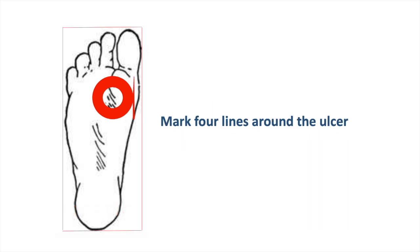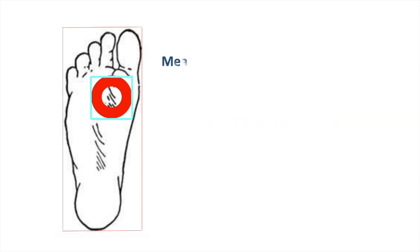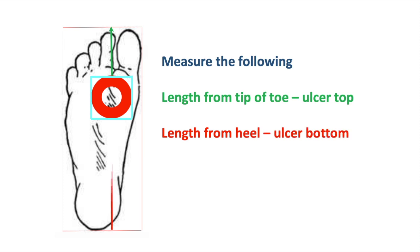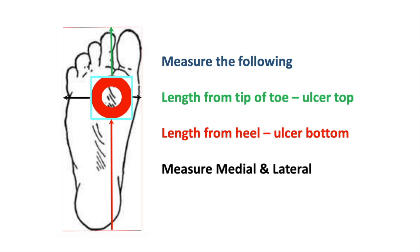Mark four lines around the ulcer and make a box, either square or rectangle. Measure the length between the tip of the toe and the top of the ulcer, and the length between the tip of the heel and bottom of the ulcer. Similarly measure the medial and lateral sides also. Record the measurements in the assessment form.